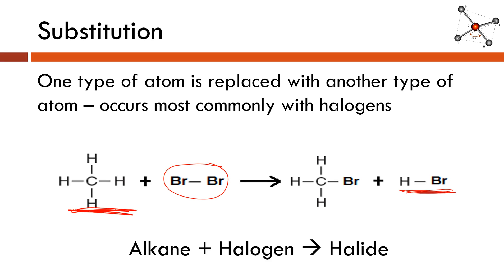So with our substitution reaction, the general formula is alkane plus halogen is going to yield a halide. Now it's important to recognize that these are going to happen stepwise. We will only substitute out one hydrogen atom at a time.